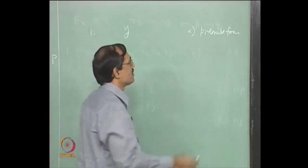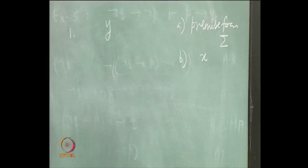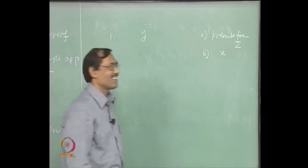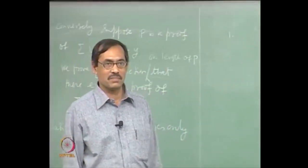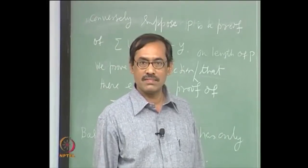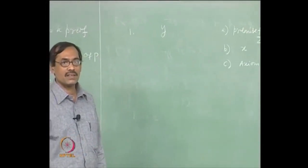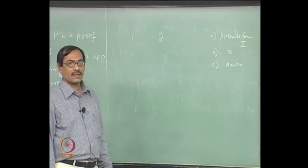Basis case: suppose P has only one proposition. The last line of P is fixed, so that line is y. Now, why is y there? It is a premise. Premise from sigma union x. So let us demarcate the cases: it can be a premise from sigma, it can be x, or it can be an axiom. In proofs, you can use axioms anywhere, so it could be an axiom. We do not know the nature of y.